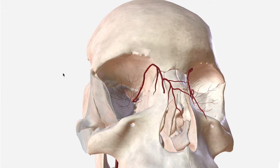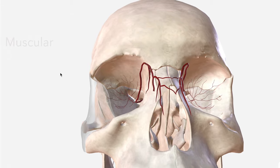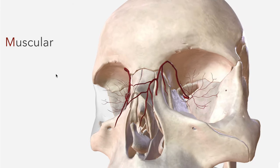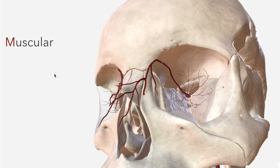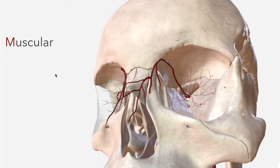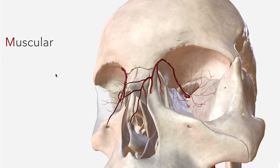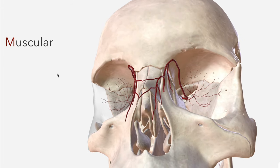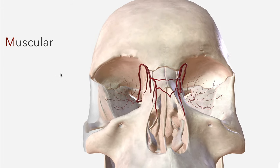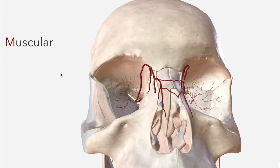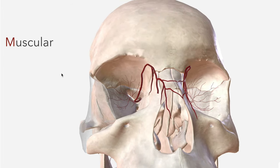Next we have the muscular artery, which supplies the extraocular muscles with their arterial blood and accompanies the oculomotor nerve in its course. Unfortunately, that artery isn't included in this model.